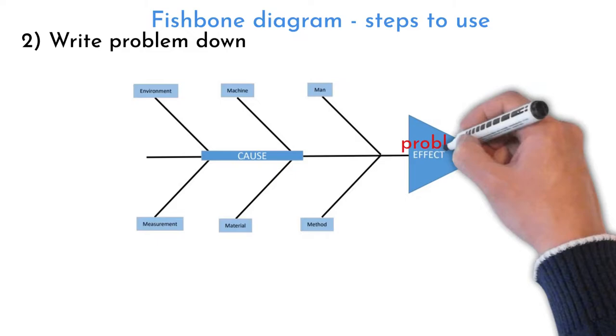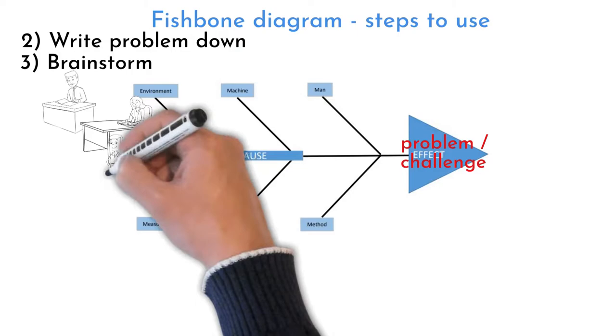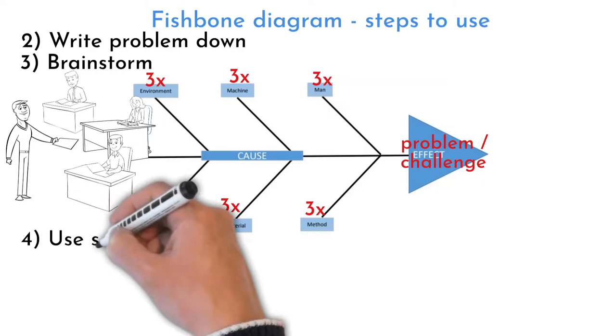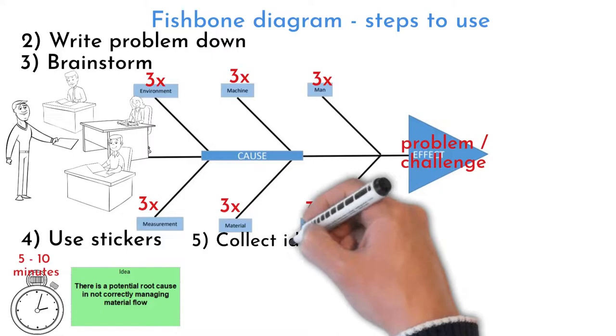Make sure everyone understands problem prior brainstorming. Write your problem into effect part of Fish Bone. Brainstorm problem potential reasons. Challenge each team member to write at least three reasons that problem occurs on each Fish Bone section. Give team five to ten minutes to write their ideas on stickers.